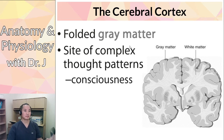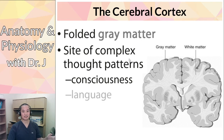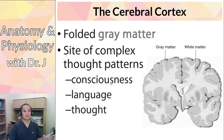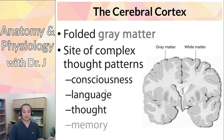Consciousness — what makes you aware, what you're using viewing this lecture right now. When you speak, you're using your cerebral cortex. Complex thought in general: the cerebral cortex is the one that does all the complex thinking. It's also very important for memory as well.